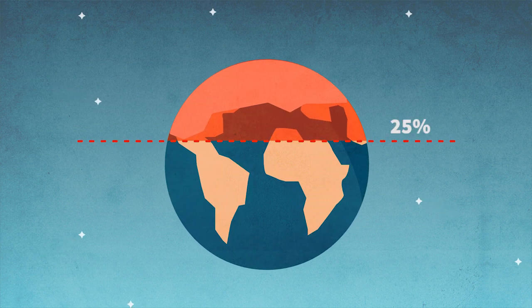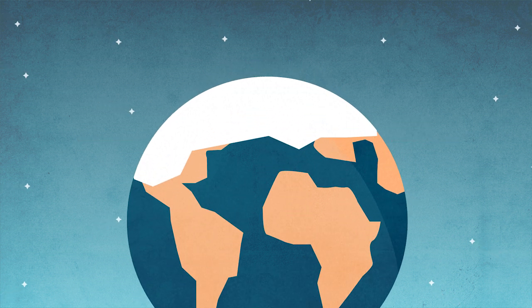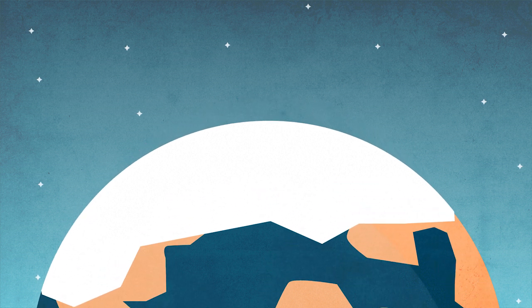Permafrost represents 25% of the Northern Hemisphere's land mass. The full effects of its thawing could have a devastating effect on climate.